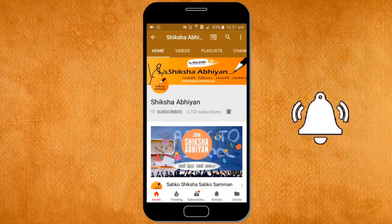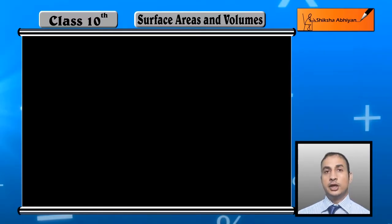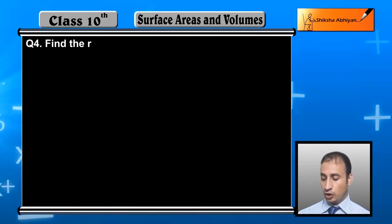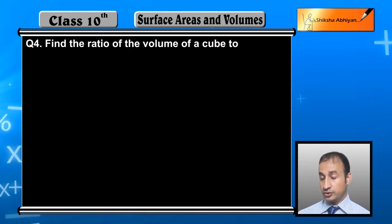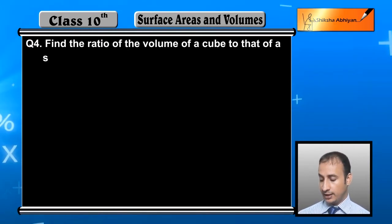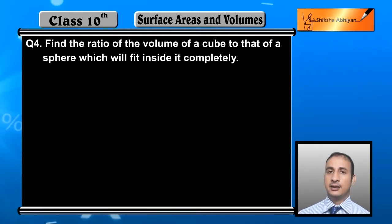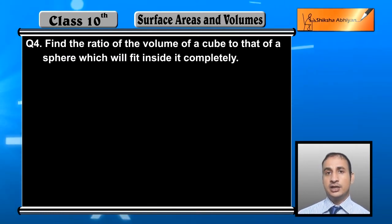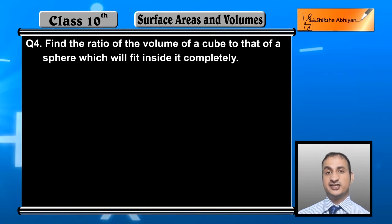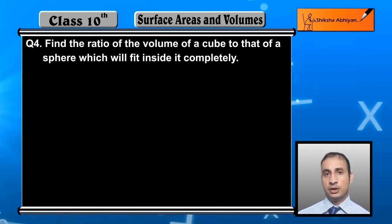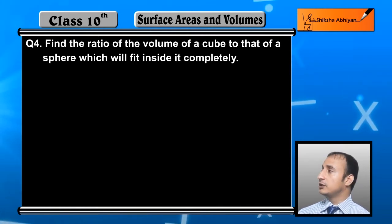Now students, see the fourth question: find the ratio of the volume of a cube to that of a sphere which will fit inside it completely. We need to find the ratio of the volume of cube to the volume of sphere, in the condition when the sphere is completely inside the cube.